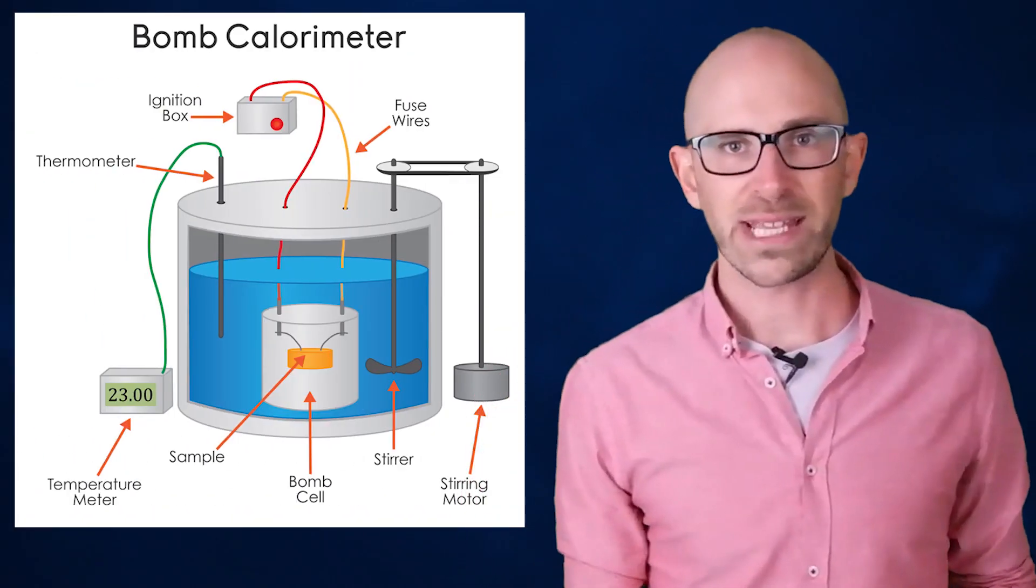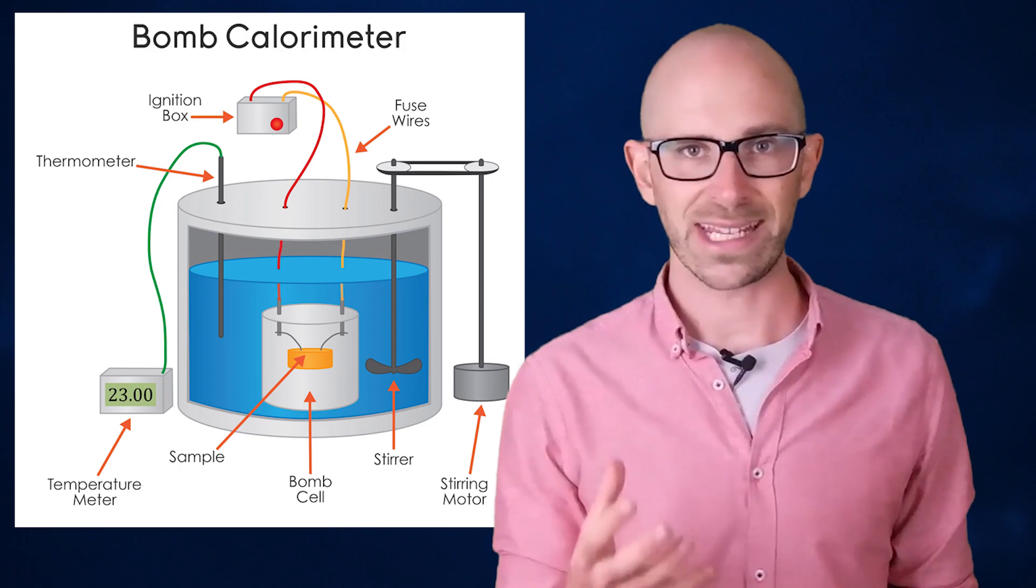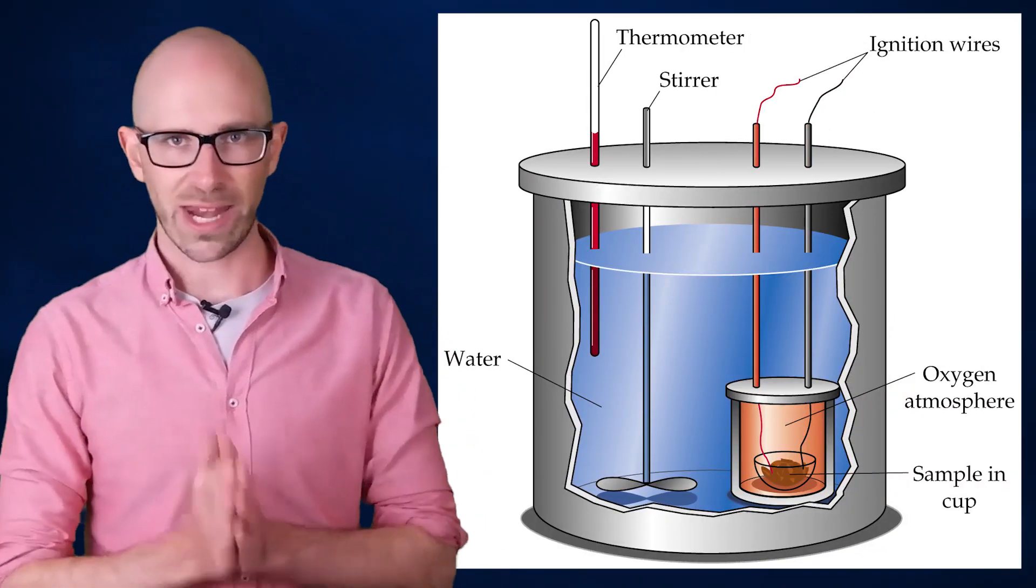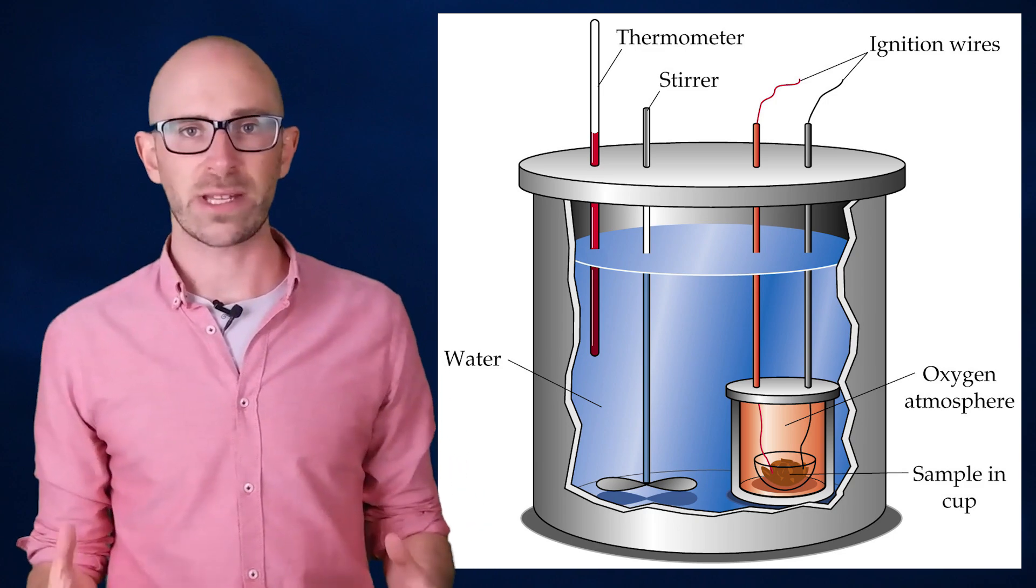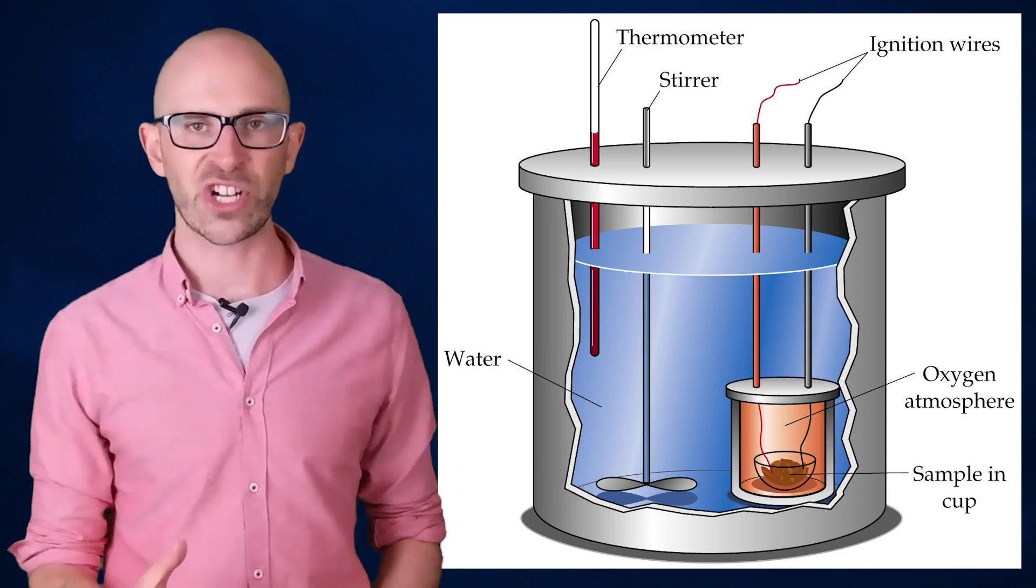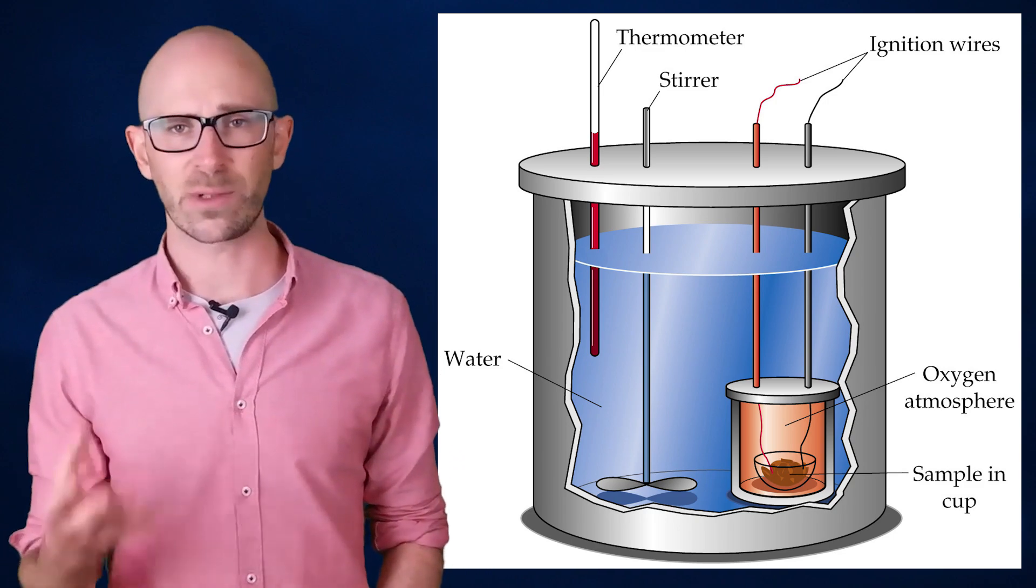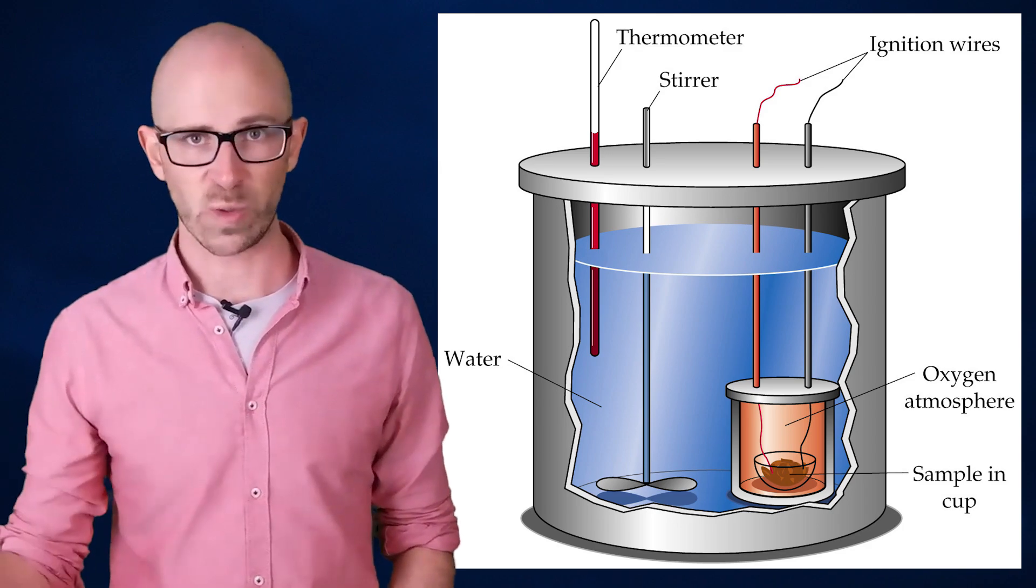Manufacturers used to measure calories using a bomb calorimeter. This process involved placing the food source in a sealed container filled with water. They would then burn the food with electrical energy. After the food completely burned up, they would measure the water temperature to see how many degrees it was raised and thus how many calories had been used.